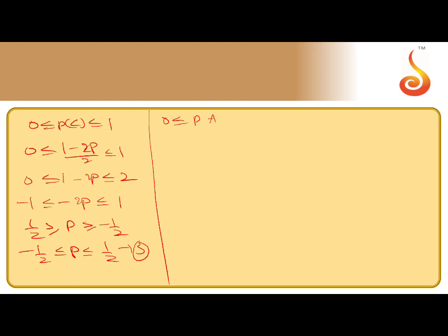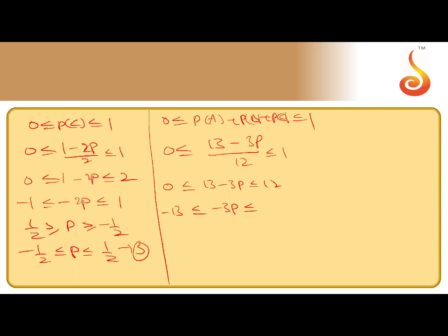For P(A ∪ B ∪ C): 0 ≤ (13 − 3p)/12 ≤ 1, giving 0 ≤ 13 − 3p ≤ 12. Subtracting 13: −13 ≤ −3p ≤ −1. Dividing by −3: 1/3 ≤ p ≤ 13/3. This is equation 4.